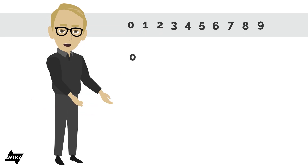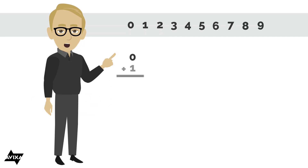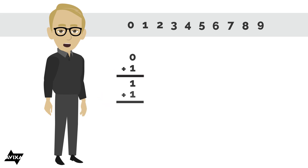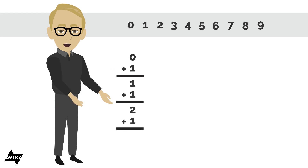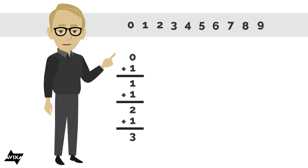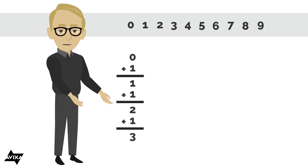We also know how to add, and we can start with 0 and add 1 to that, and that gives us 1. Add one more to that, that gives us 2. Add one more to that, that gives us 3. Here we're making changes in multiples of 1, and we call this the ones place.